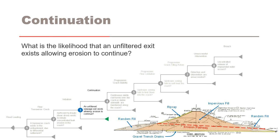For node 3 — continuation — what is the likelihood that an unfiltered exit exists allowing erosion to continue? As shown in the embankment cross section, there was no chimney or downstream filter included in the original embankment design. The random fill berms where the leakage exits were located were comprised primarily of shale and sandstone, which did not provide any filtering action. Therefore, there was an unfiltered exit at the time of the internal erosion incident.